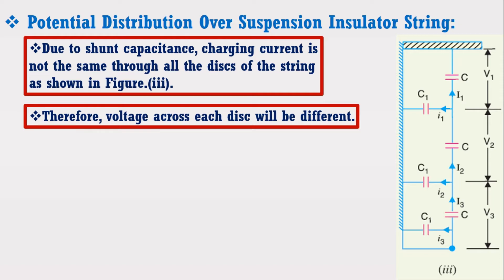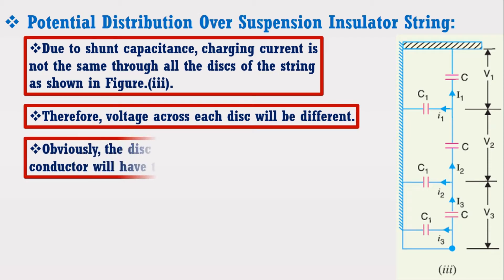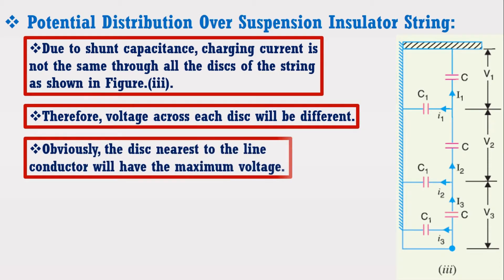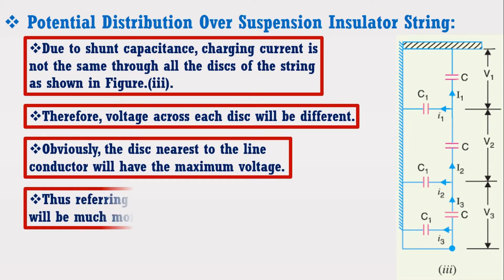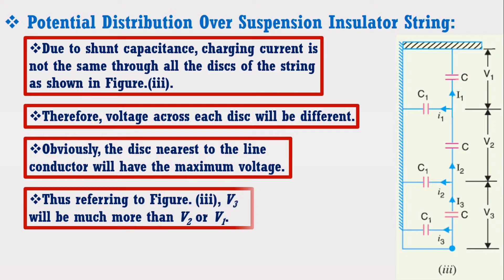Due to this, the disk nearest to the line conductor will have the maximum voltage. Thus, referring to figure 3, V3 will be much more than V2 or V1.